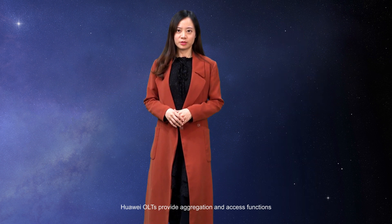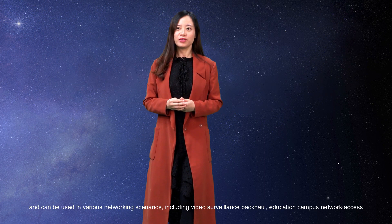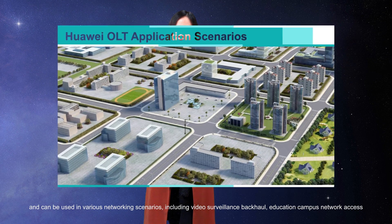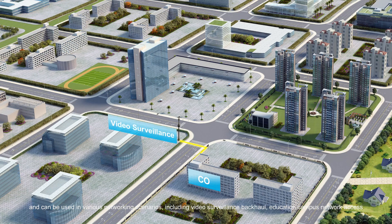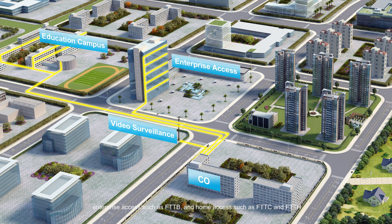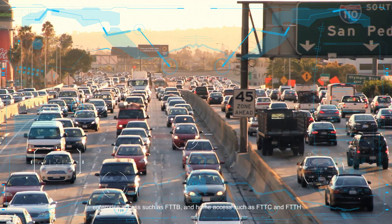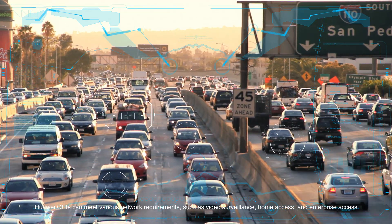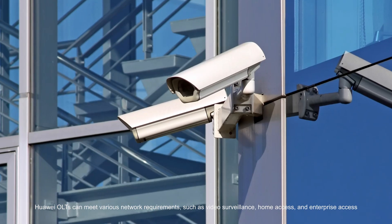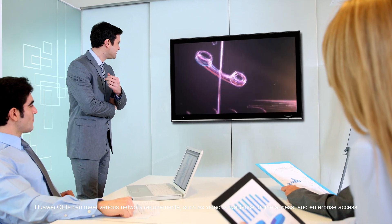Huawei OLTs provide aggregation and access functions and can be used in various networking scenarios, including video surveillance backhaul, education campus network access, enterprise access such as FTTB, and home access such as FTTC and FTTH. Huawei OLTs can meet various network requirements such as video surveillance, home access, and enterprise access.